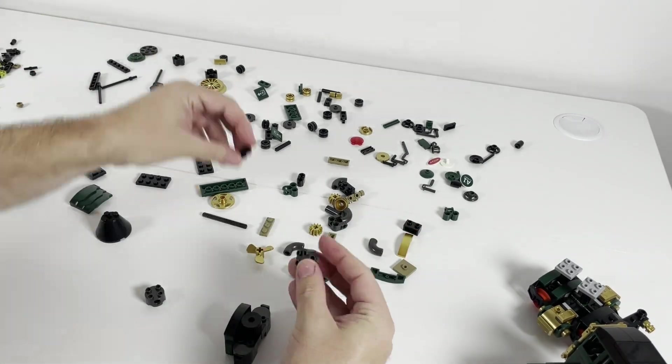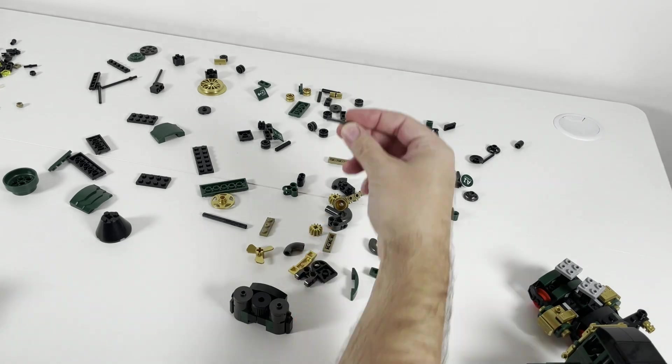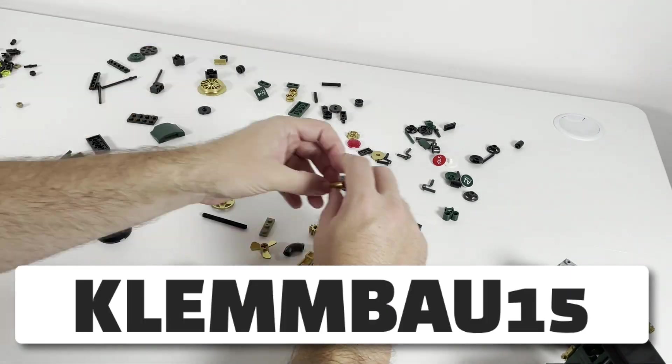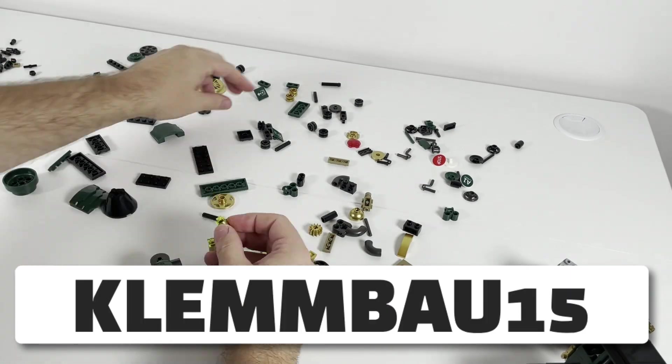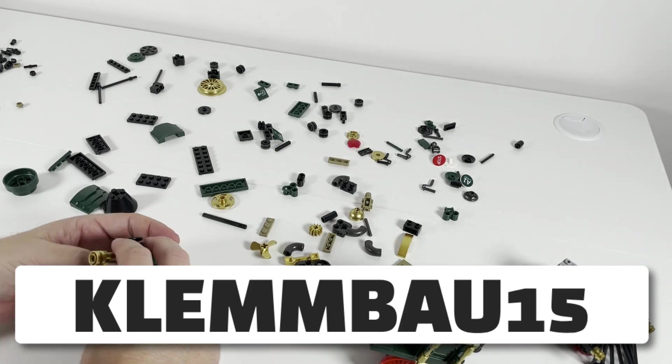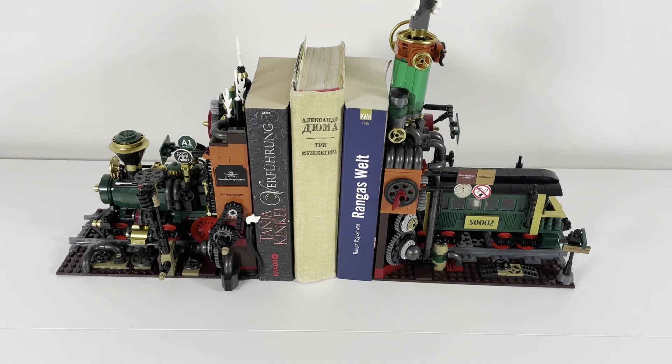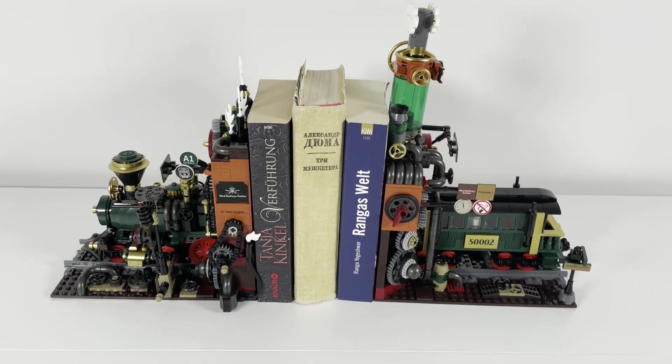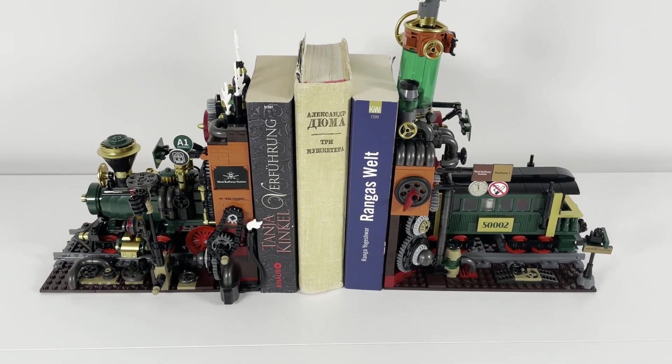You can buy it on jmbricklayer.com or on Amazon. Let me remind you once again about my affiliate link and the 15% discount code, which work on jmbricklayer.com. Thank you for watching and if you liked this review, give a thumbs up. Don't forget to subscribe to Clembo.